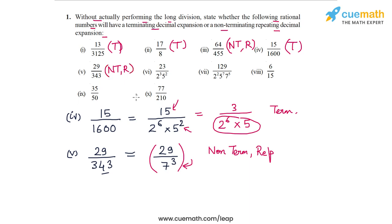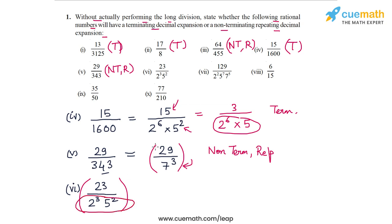Part 6: the number is 23/(2^3 × 5^2). The denominator is already given in prime factorized form. This number is in its lowest form and the denominator has only 2s and 5s, so it will have a terminating decimal expansion.